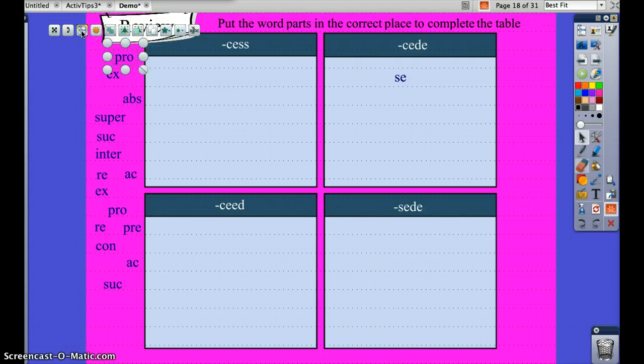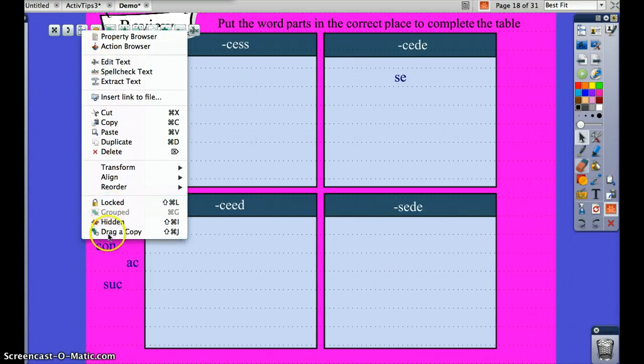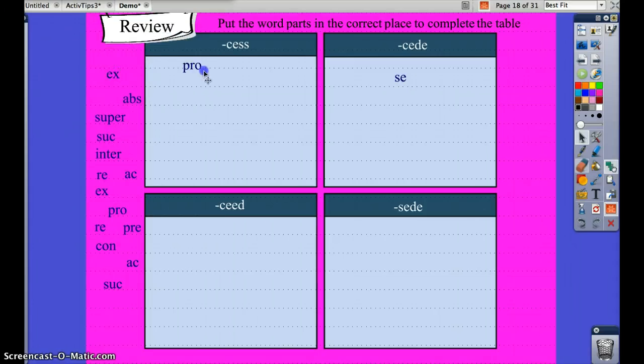So I'm going to click on one. I'm going to click on the menu here, and I'm going to click on drag-a-copy. Because pro could go in process or in proceed.